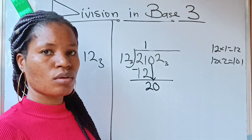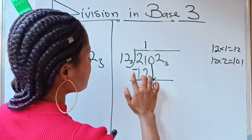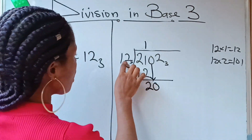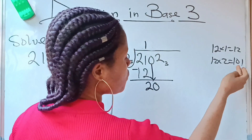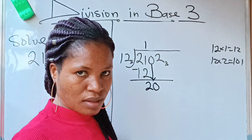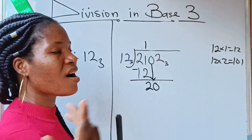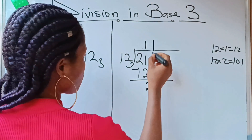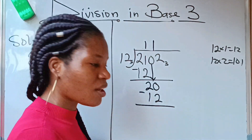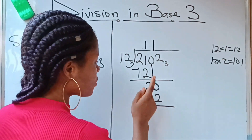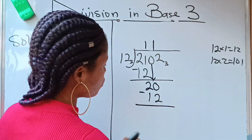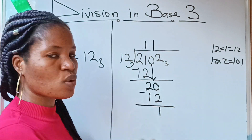We bring down the next figure, which is 0, giving us 20. Now 12 divides 20 — it's not in the times table as a direct match; 101 is too large, so it is times 1 again. We write 1 in the quotient. 1 times 12 is 12. Subtracting in base 3: 0 minus 2 is not possible, so we borrow a bundle of 3. 3 minus 2 is 1, and 1 minus 1 is 0.